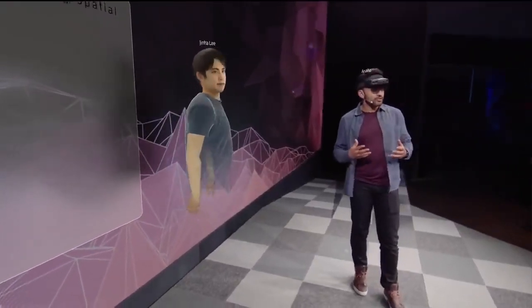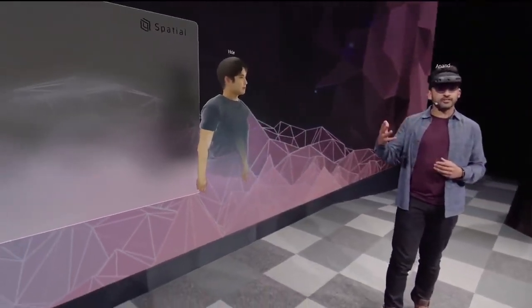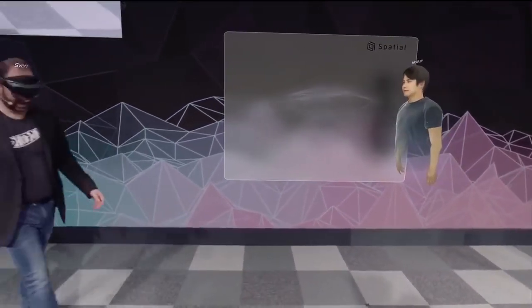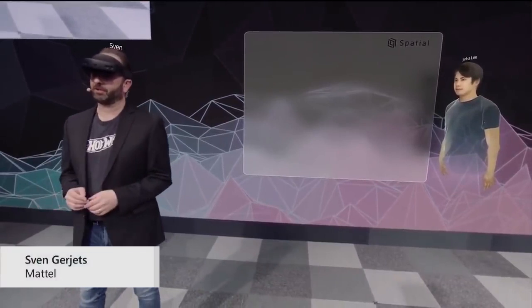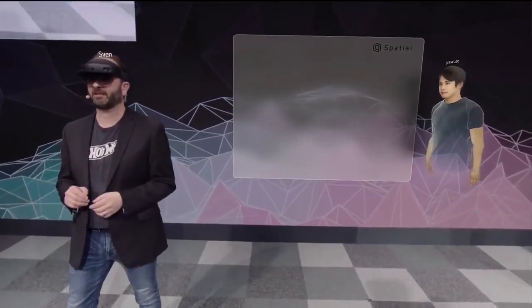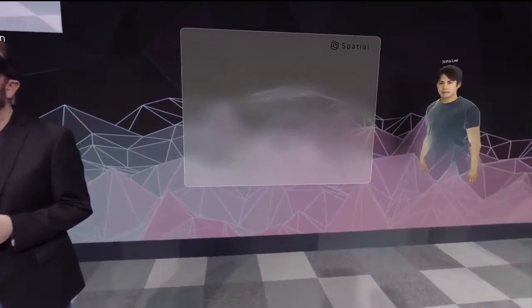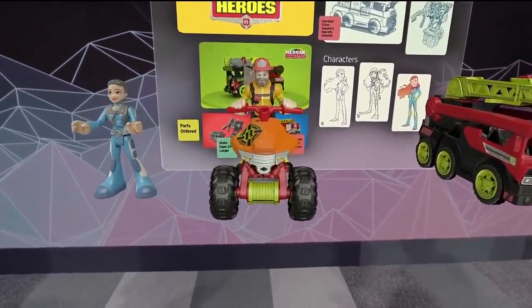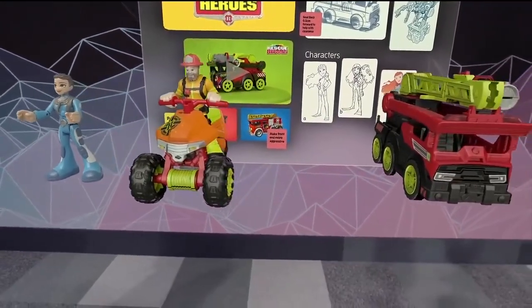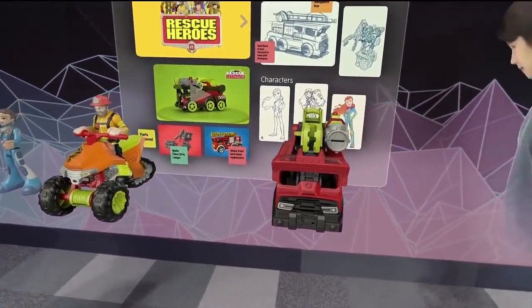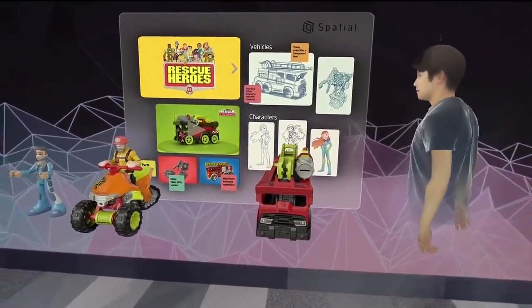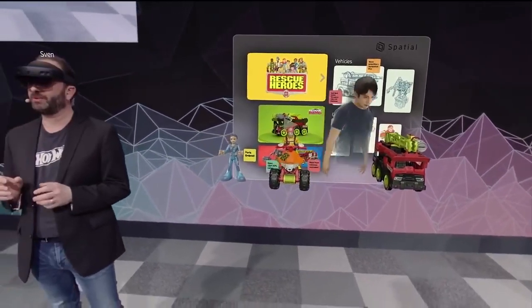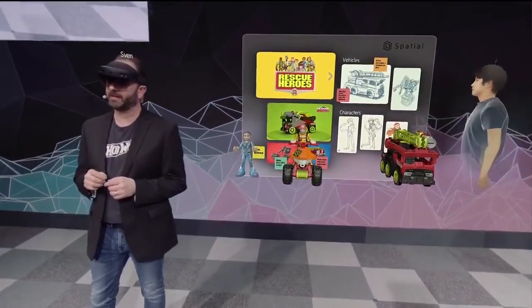Cool. Now, to show you how companies are using Spatial to transform the way they work, let's invite Sven Gergits, CTO of the iconic toy brand Mattel onto the stage. Hey, guys. How awesome is this? So, at Mattel, we're undergoing a massive digital transformation. It's touching all aspects of our business. This includes the way that we're using technology to design and to develop our products. Our classic brands like Barbie and Hot Wheels and Fisher Price, they have diverse teams of designers, engineers, marketers,